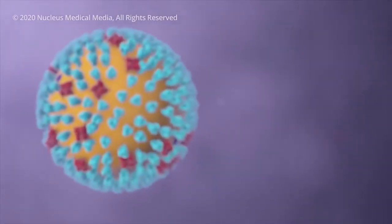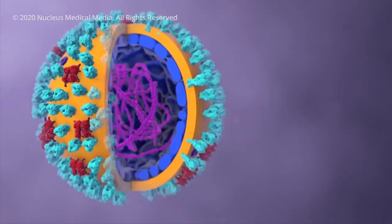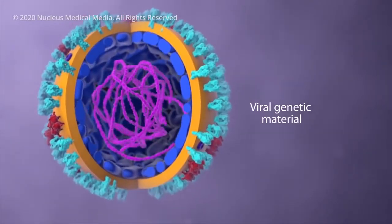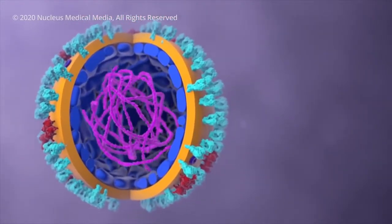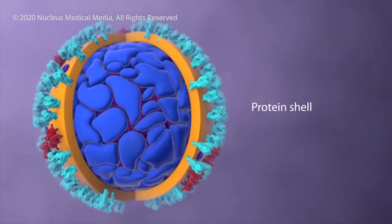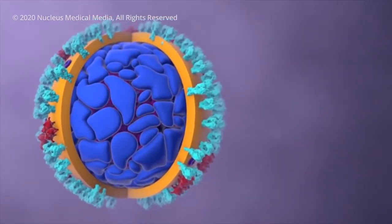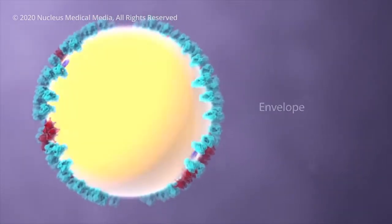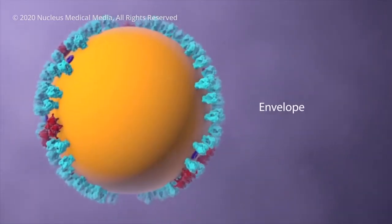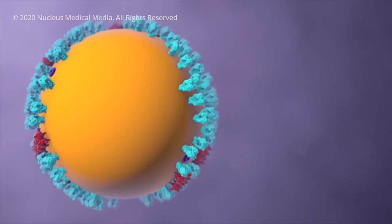Inside the virus, genetic material contains the information to make more copies of itself. A protein shell provides a hard protective enclosure for the genetic material as the virus travels between the people it infects. An outer envelope allows the virus to infect cells by merging with the cell's outer membrane.